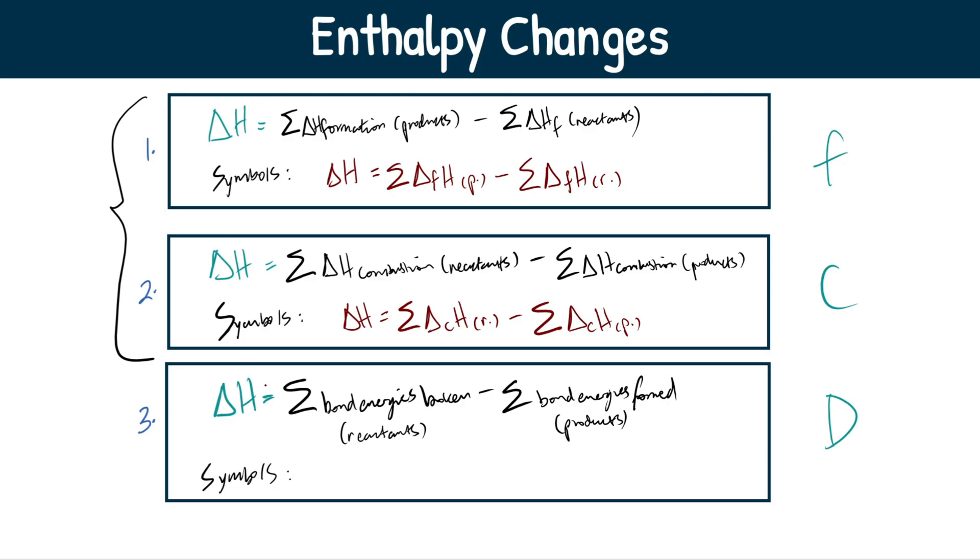Now let's do some symbols for this. Enthalpy change of reaction again equals the sum of D. This is bond dissociation. You can write it as BD, you can write it as capital B, capital D. However you remember it, I just do it as capital D for now. As long as you get the formula correct and you use it to carry out the correct calculation, you're going to be all good to go. And then we're going to put B here. This is for broken minus the sum of bond dissociation energy formed.